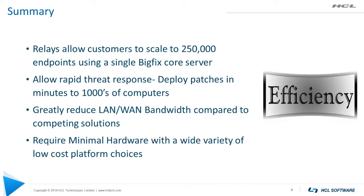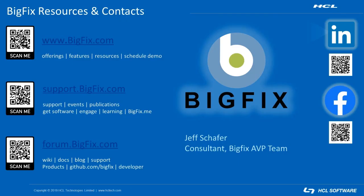That wraps up our intro to relay training. We learned that relays allow customers to scale up to 250,000 endpoints using a single BigFix core server. If deployed in the proper locations, you can do rapid threat response and deploy patches in minutes to thousands of computers. Proper relay deployment greatly reduces LAN and WAN bandwidth compared to competing solutions, and relays require minimal hardware with a wide variety of low-cost platform choices. Thank you for joining me, feel free to browse the BigFix online resources linked on screen, subscribe to our channel, and keep an eye out for more detailed relay videos. My name is Jeff Schaefer — see you soon.